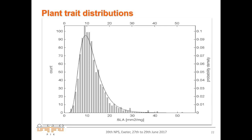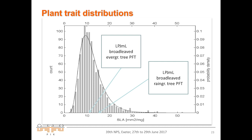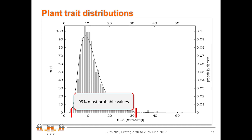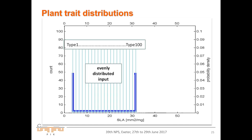VCmax in LPJ versions is calculated from photosynthesis — it is not a prescribed trait. If you take, for example, the plant-trait distribution for SLA, you have a certain function. To remind you, the early version used two constants, meaning we would simulate only two strategies. What we do now in the new version is take the 99% most probable values and give them an equal chance in the model to be selected — and that's very important.